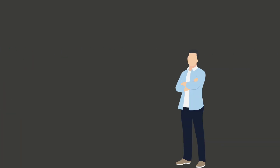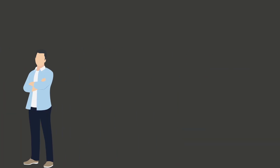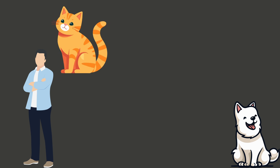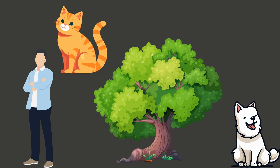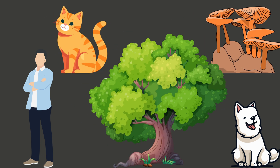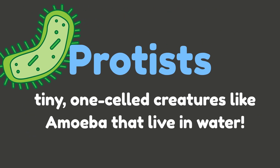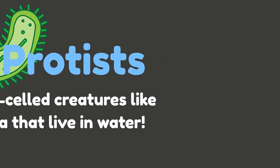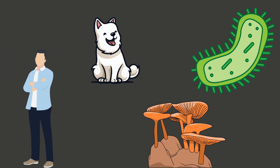So who has eukaryotic cells? Lots of living things — like humans, dogs, cats, trees and plants, fungi like mushrooms, and even protists, which are tiny one-celled creatures like amoeba that live in water. So whether you're a human, a dog, a mushroom, or even a tiny amoeba, you are rocking some awesome eukaryotic cells.